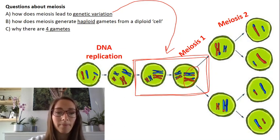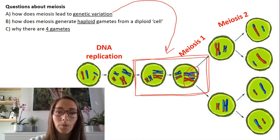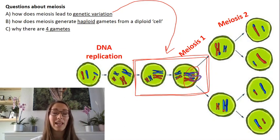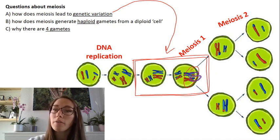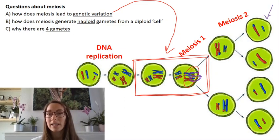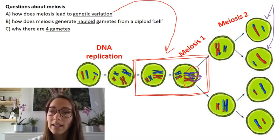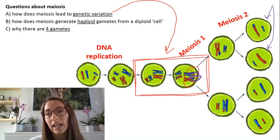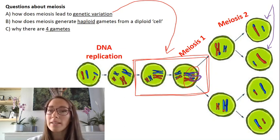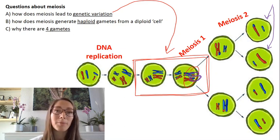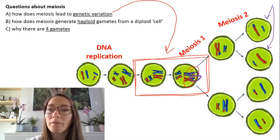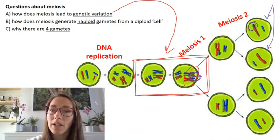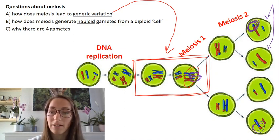Here we can see a homologous pair, and if we look closely we can see that this length of DNA has swapped for this length of DNA on the other chromosome in that pair. Crossing over results in genetic variation in the gametes. This cell and this cell look like they should be genetically identical, but because of crossing over there's a little bit of variation. They've both got a big red chromosome and a small blue one, but the red chromosomes aren't genetically identical — this chromosome has now got some genetic information from the other, potentially different versions of the same gene.